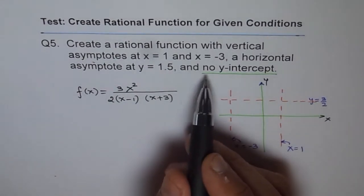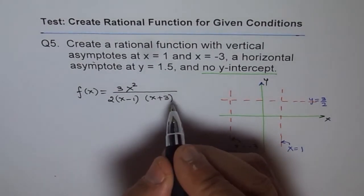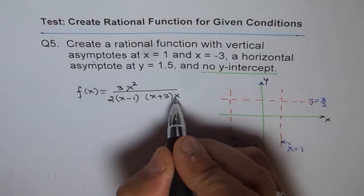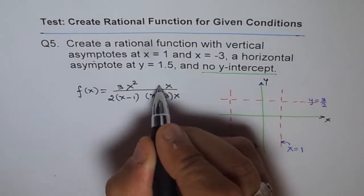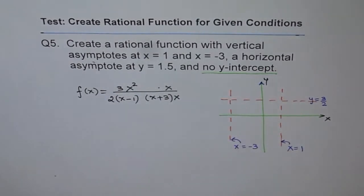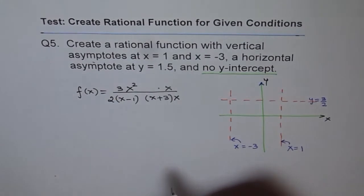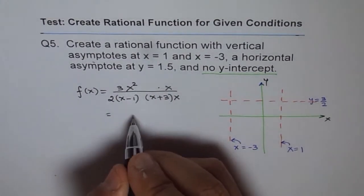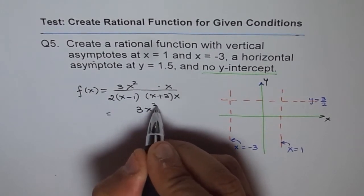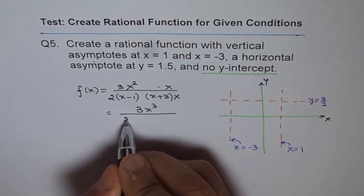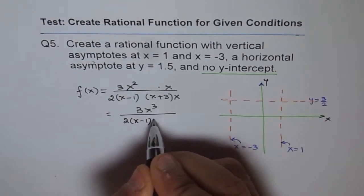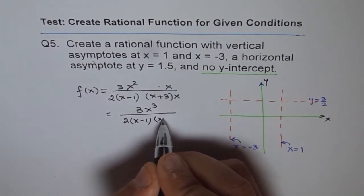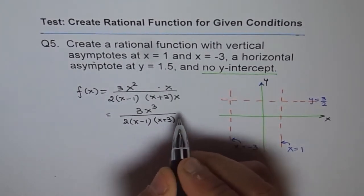But when we have no y-intercept, it means there should be a factor in the denominator and in the numerator which should cancel out. So that is how our equation is going to develop. So now we can write finally our answer as, it is 3x squared over 2 times x minus 1 times x plus 3 times x.